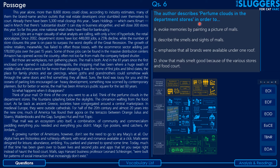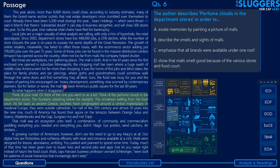Question six: The author describes perfume clouds in the department stores in order to — complete the sentence. The point of reference: 'Think of your mall or the one you went to as a kid. Think of the perfume clouds in the department stores, the fountains flashing below the skylight, the cinnamon wafting from the food court.' The author is clearly using 'think of' to have the reader imagine or recall the atmosphere of a mall — somewhere on the lines of evoking memory or atmosphere.